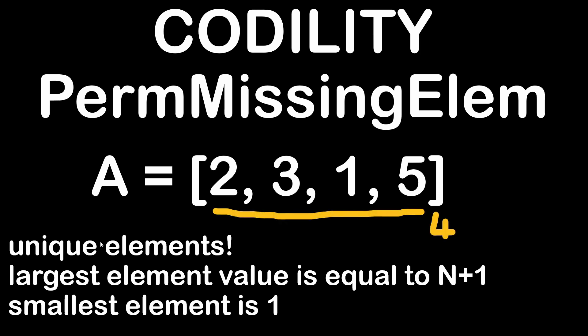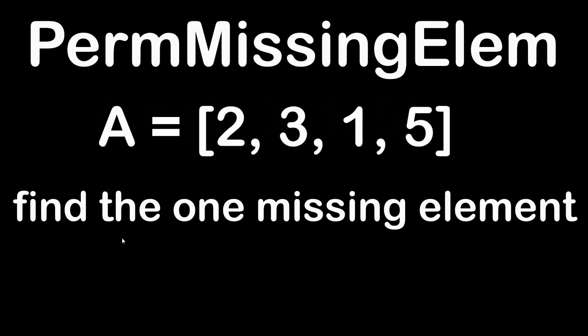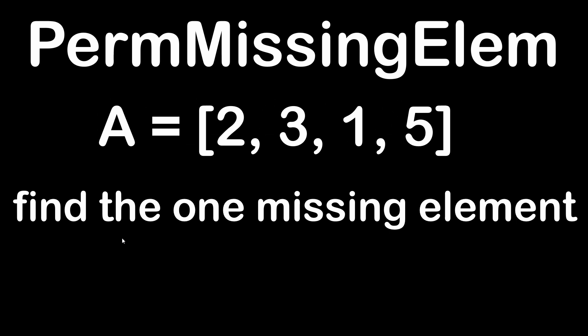Here for example the array contains 4 elements and the largest number is 5, which is 4+1. This means that basically we have one missing element, which is the number 4. The purpose of our solution is to find this one missing element.